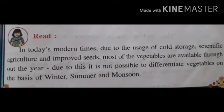So now let's go ahead to page number 83, at the last paragraph at the bottom of the page. In today's modern times, due to usage of cold storage, scientific agriculture, and improved seeds, most of the vegetables are available throughout the year. We are living in the 21st century and there is modern technology, cold storage facility, and scientific agriculture is improved. So we can see many vegetables throughout the whole year.